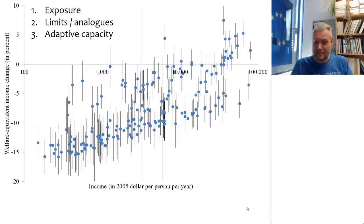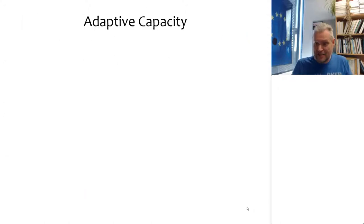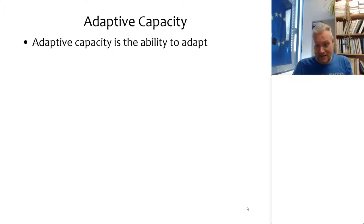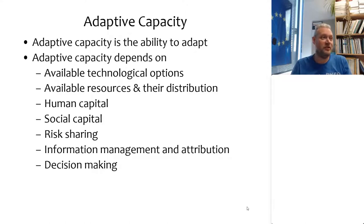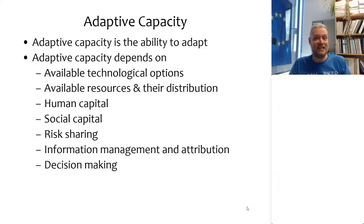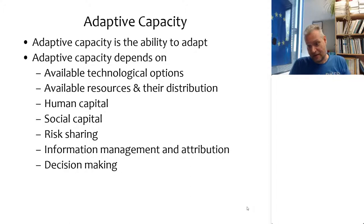The third reason is that poorer places tend to have lower adaptive capacity. Adaptive capacity is simply a fancy word for the ability to adapt, which in turn depends on a whole host of things. If you're wondering what sea level rise will do to your city, the answer depends on what technologies you have available. If you don't know about seawalls and dikes, sea level rise poses an insurmountable problem and the only thing you can do is withdraw from the coastline and move inland.